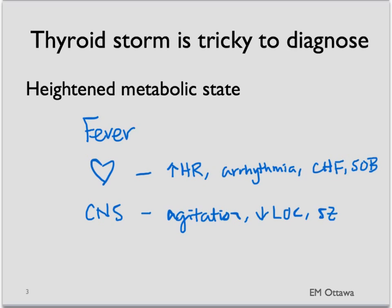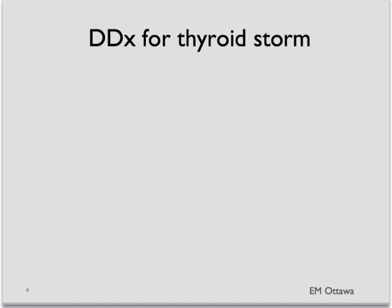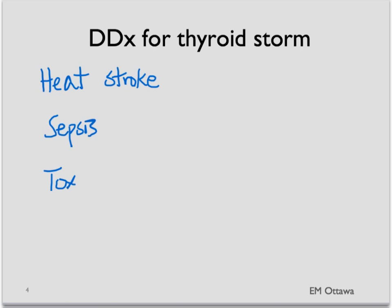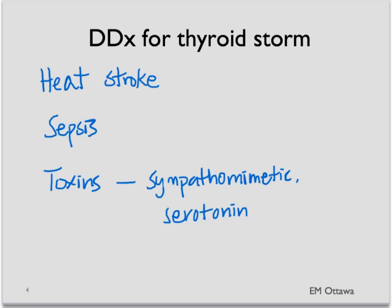What conditions can you think of that look like this? There are three main broad categories. First is heat stroke — often the history might be helpful. The second category is sepsis, which can affect any part of the body. The last broad category is toxins, such as sympathomimetics, serotonin syndrome, or neuroleptic malignant syndrome. They can all look like Thyroid Storm.